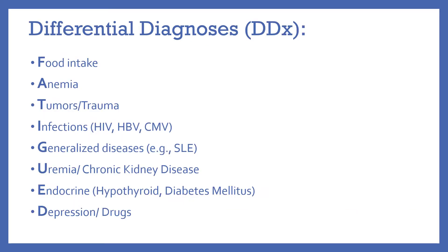Here is an acronym that uses the word FATIGUE to help you remember some of the most common differential diagnoses. F is for food intake, A for anemia, T for tumors and trauma, I for infections, G for generalized diseases, U for uremia and chronic kidney disease, E for endocrine, and D for depression and drugs.